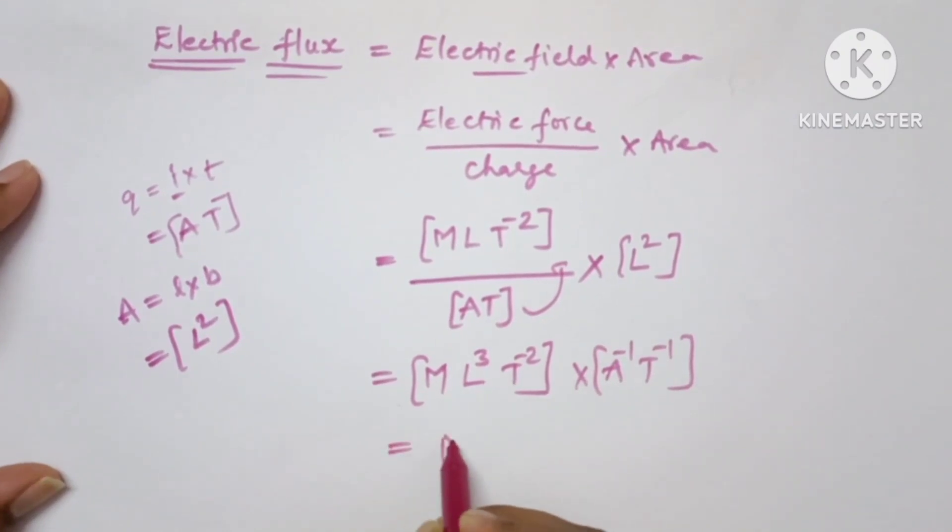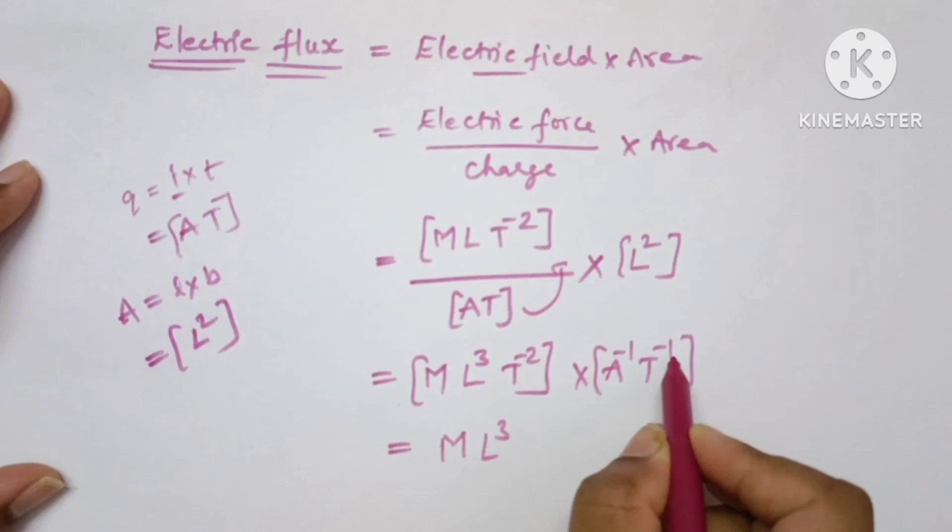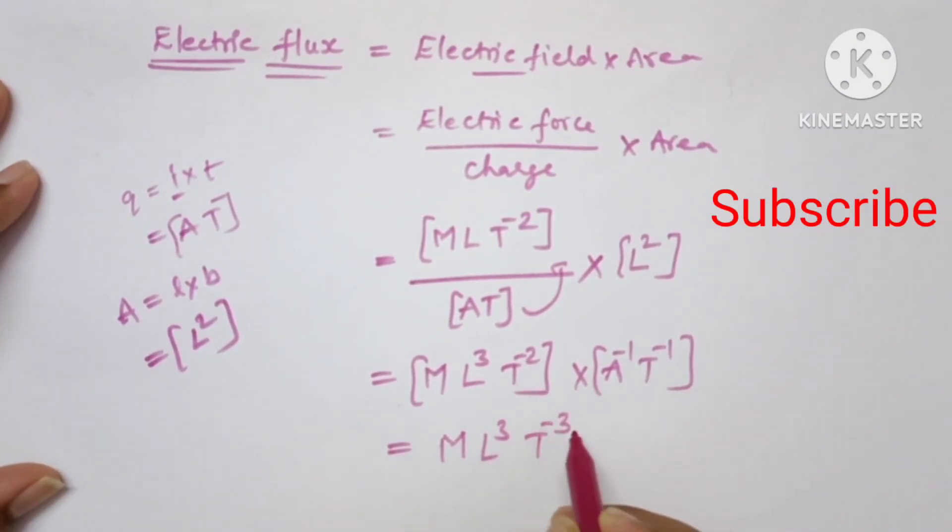Now write in MLT format: ML^3. Here it is T^-1 and T^-2, so T^-3 and A^-1.